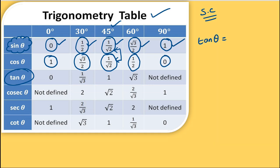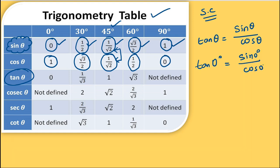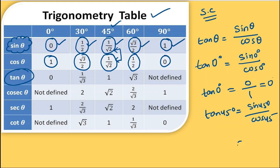Tan theta is very simple: tan θ = sin θ / cos θ. So tan 0° = 0/1 = 0. For tan 45°: sin 45° = 1/√2 and cos 45° = 1/√2, so they cancel and tan 45° = 1. Remember: tan 0° = 0, tan 30° = 1/√3, tan 45° = 1, tan 60° = √3.